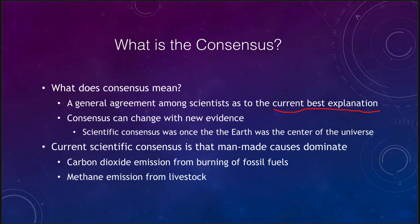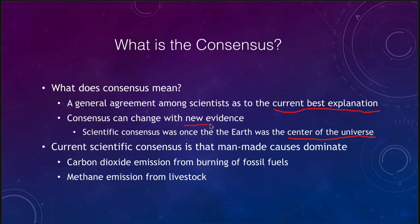For example, the scientific consensus is that general relativity is the best explanation of gravity we have right now — but that can change with time. Just because something is the scientific consensus today does not mean it will be tomorrow. There was once scientific consensus that nearly all scientists would have agreed just several hundred years ago that the earth was the center of the universe. With new evidence and observations by Galileo and theories by Copernicus, we changed that, and now we know that the earth is not the center of the universe.